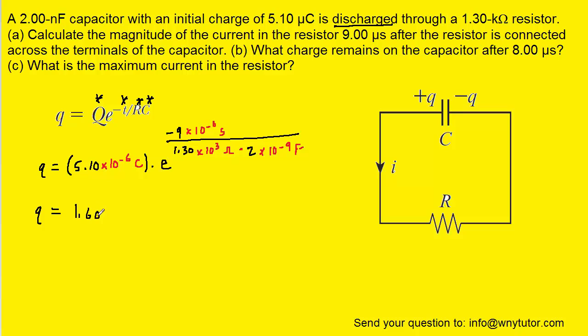We get approximately 1.60 times 10 to the minus 7, and since we used all standard units, this comes out in coulombs. That's good, but we're not yet ready to solve part A. What we're going to do next is calculate the potential difference across the capacitor. That's simply going to be the amount of charge present on the capacitor at this time, divided by its capacitance.